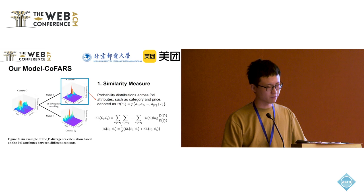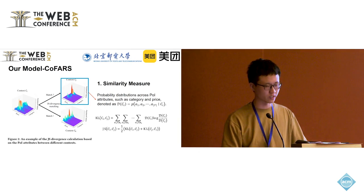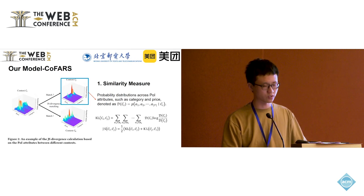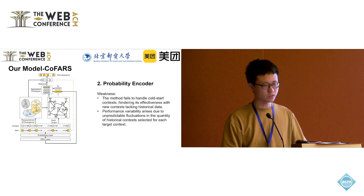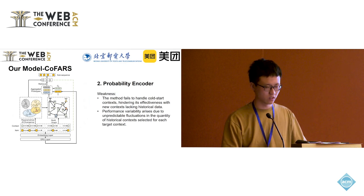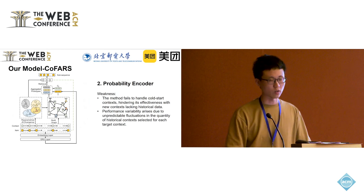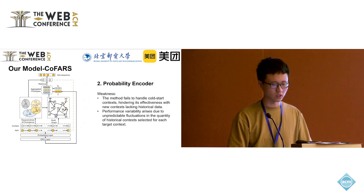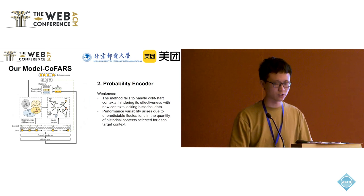The left figure is a visualization of the order distributions over the price and category dimensions, calculated from local data and viewed as the user's interest in points under the context. Based on this similarity metric, we calculate the similarity between the target context and the historical context, followed by selecting a subset of similar contexts. However, this struggles with the context cold-start issue and is very sensitive to the quality of selected contexts.